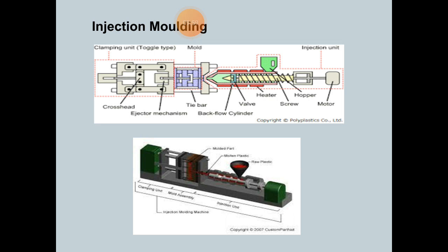The figure shows the schematic diagram of injection molding. Various components are shown: clamping unit, injection unit, drive unit, mold, hydraulic system, control system, hopper, heater, and cooling channels.